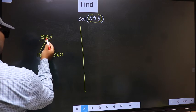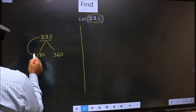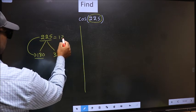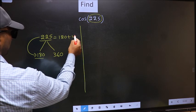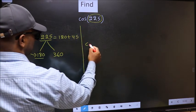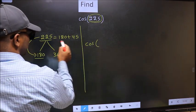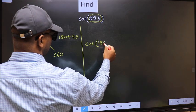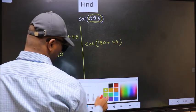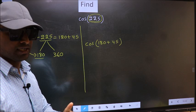Next, 225 is close to which number? This is close to 180. So this should be written as 180 plus 45. This will become cos, and in place of this, we write 180 plus 45. This is your step 1.